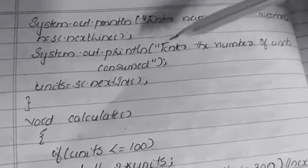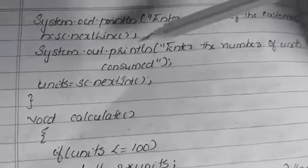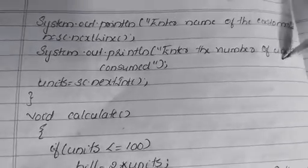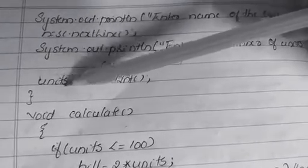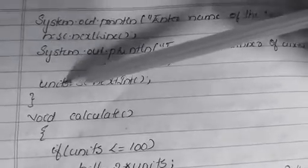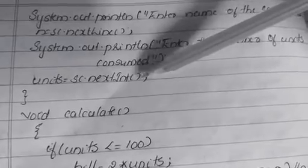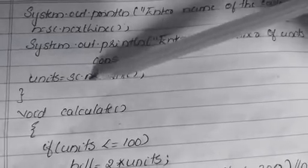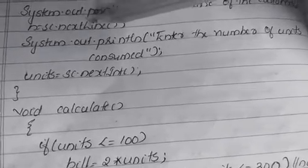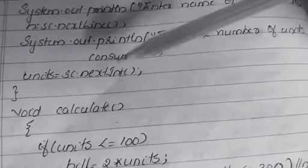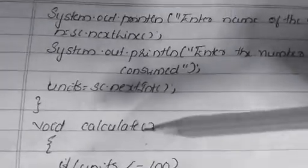Next, to receive the number of units consumed, add the prompting message: System.out.println("Enter the number of units consumed"). Since units is of integer type, write units = sc.nextInt() — note that nextInt has no space and the 'I' should be capital. Then close the accept method and proceed to declare the next method, void calculate.